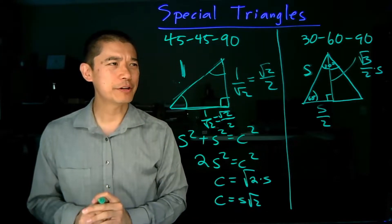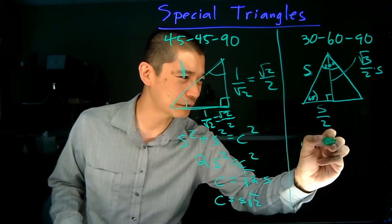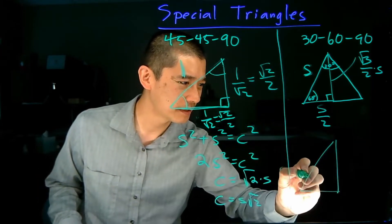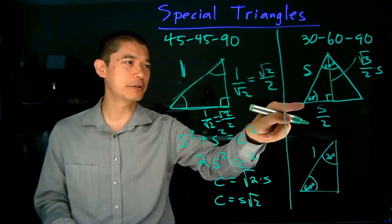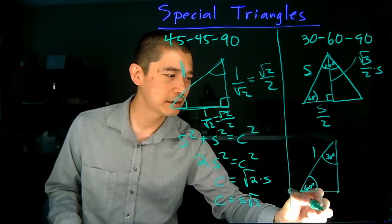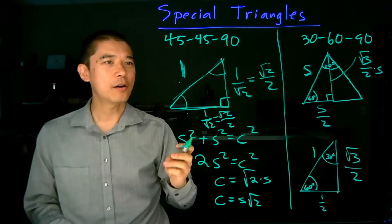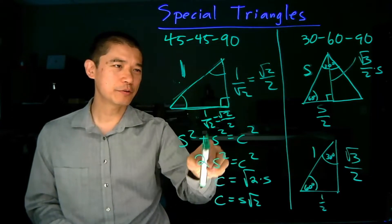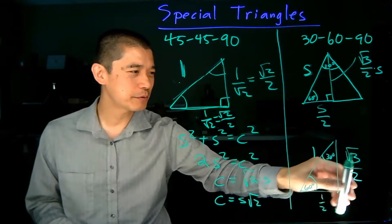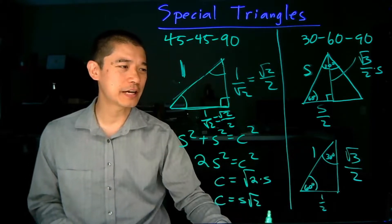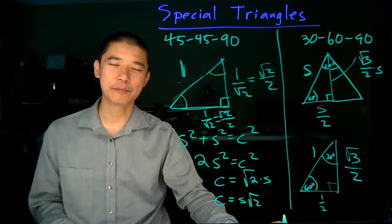Just as before, we are interested in when the hypotenuse has length 1, so we set S equal to 1. With a 60-degree angle and a 30-degree angle, the hypotenuse is 1, the shorter leg opposite the 30-degree angle becomes 1 half, and the longer leg becomes the square root of 3 over 2. All of these values — square root of 2 over 2 for the 45-45-90 triangle, and square root of 3 over 2 and 1 half for the 30-60-90 triangle — are the important values we'll need when looking at trigonometric functions.